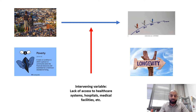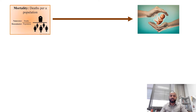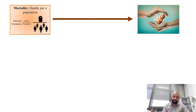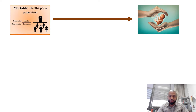Here we are trying to establish the relationship between mortality and fertility. Mortality means the percentage of deaths per population — the rate of deaths in a population or community. Fertility is how frequently children are born in a population.